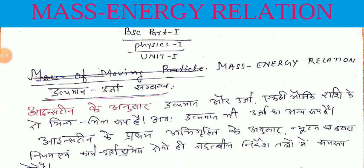Good morning friends. Today we are going to discuss the first unit in BAC part. The last important point is Einstein's equation, which everyone knows, and that is E equal to mc squared. It is called the mass-energy relation, also known as Einstein's equation.